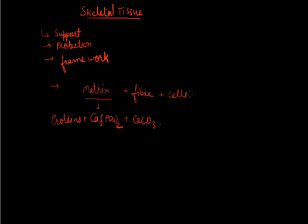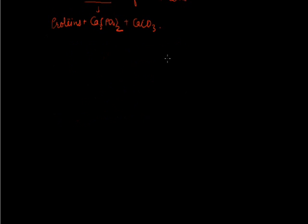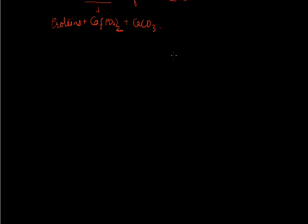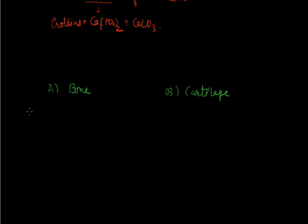Skeletal tissue, or rigid tissue, can be categorized into two categories. The first one is called bone, while the other type is cartilage. First we will discuss about bone.